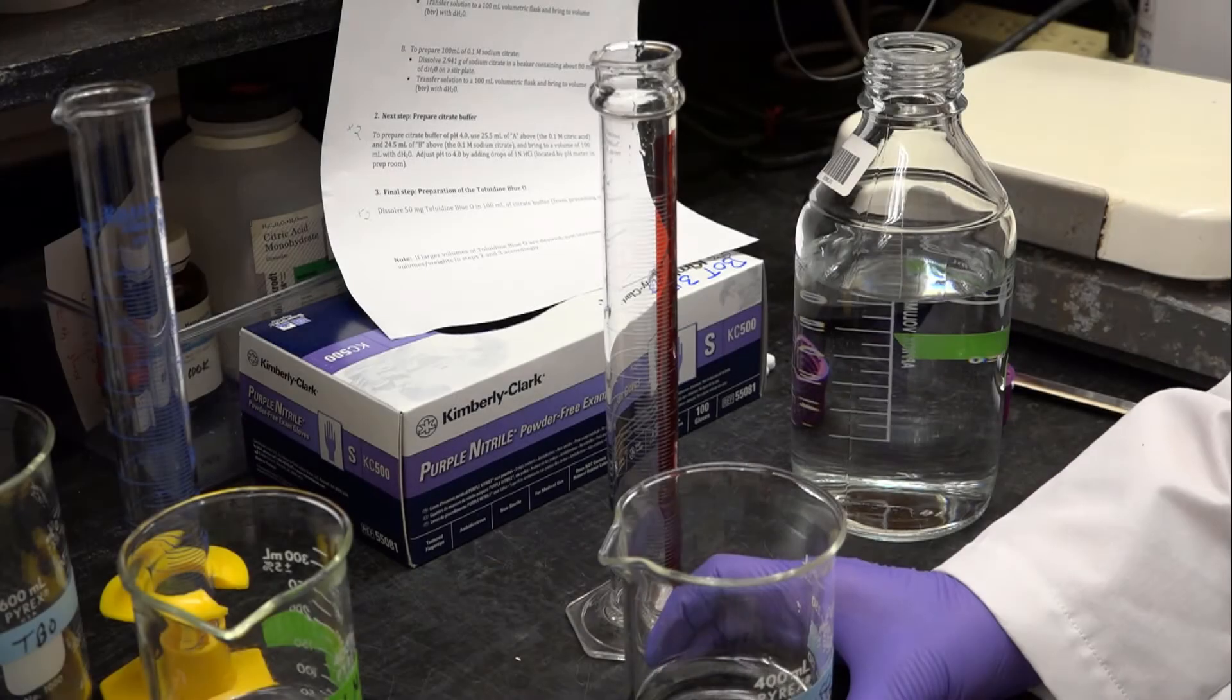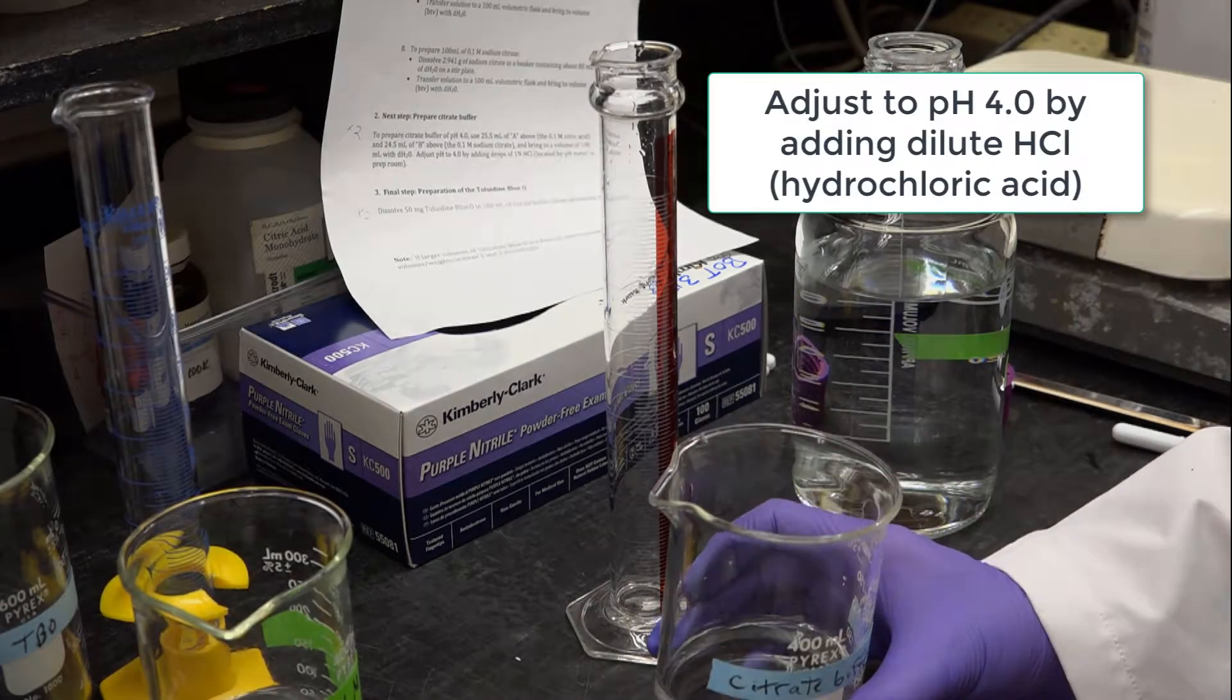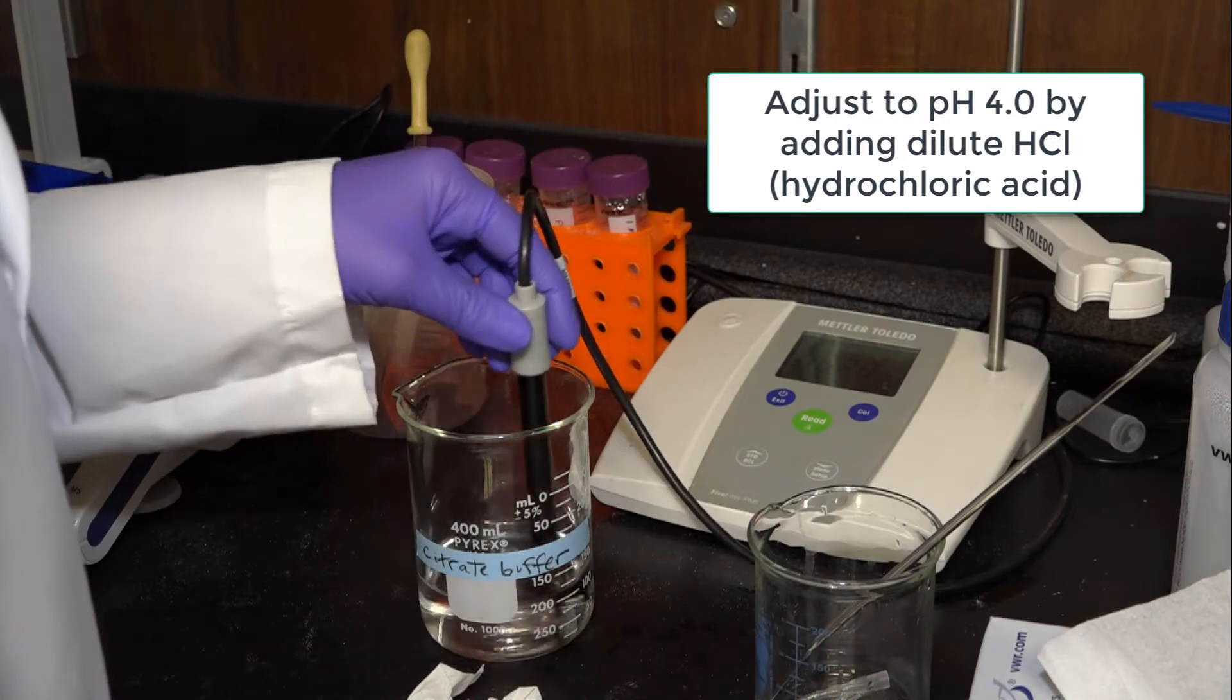So now I have my citric buffer. The next thing I need to do is adjust the pH to 4.